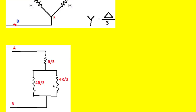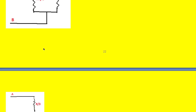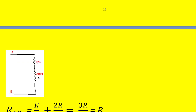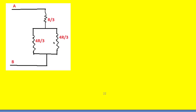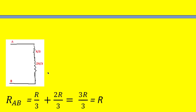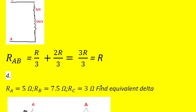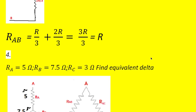Taking the equivalent of the two parallel resistors of 4R/3 and 4R/3, then adding that to the Rc value of R/3: the parallel combination of 4R/3 and 4R/3 gives 2R/3. Adding the series Rc of R/3 gives 2R/3 + R/3 = 3R/3 = R. So the equivalent resistance Rab between terminals A and B is capital R.